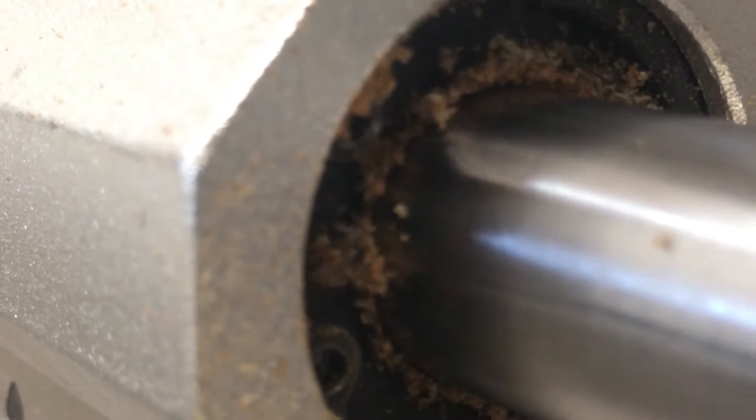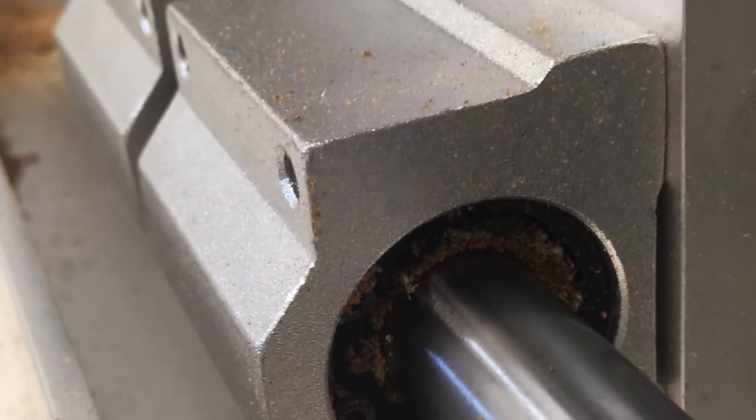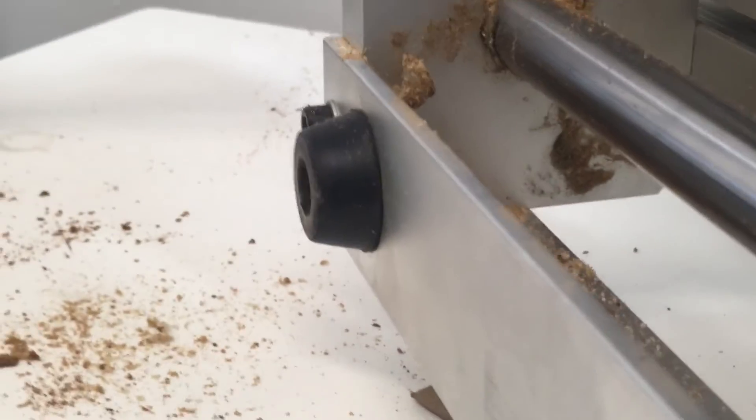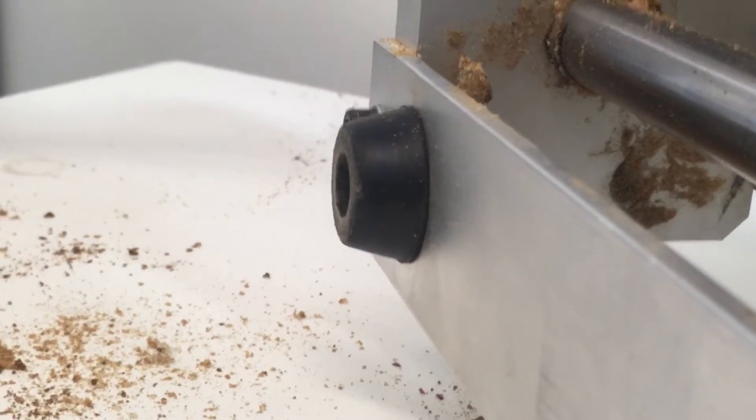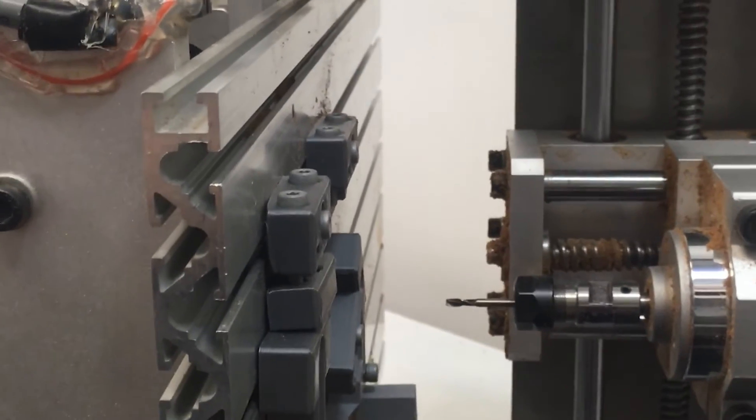Now on to the machine upgrades itself. The main linear bearings on the bottom have a significant amount of slop in them. Both the bearing itself and the bearing holder around them. And you can see here how much the base moves with just rocking the machine back and forth by hand.